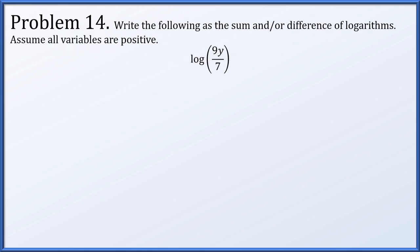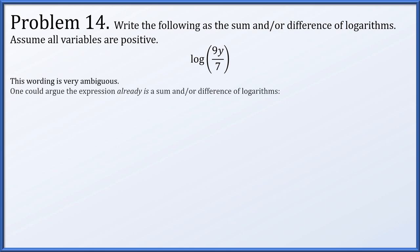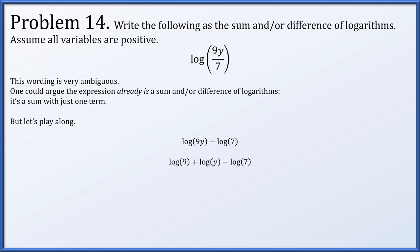Problem 14: write the following as the sum and/or difference of logarithms, assuming all variables are positive. We have the common logarithm of 9y over 7. Since we have the logarithm of a quotient, we break it up as a difference. Then we have the log of 9y, which is the logarithm of a product, so we break that up as a sum: log of 9 plus log of y minus log of 7.